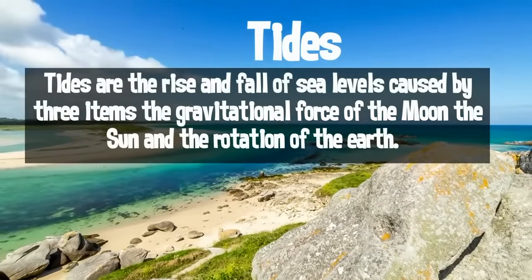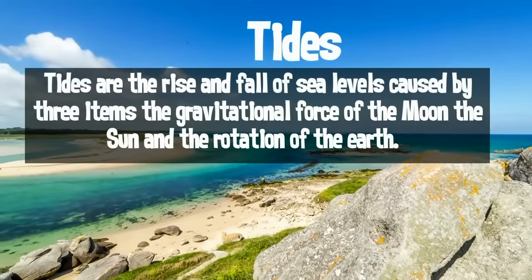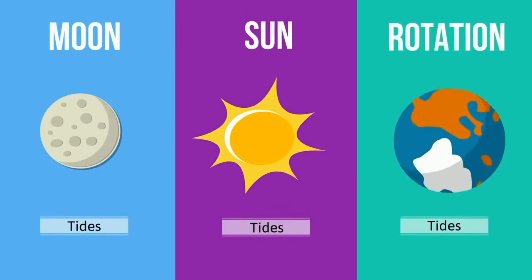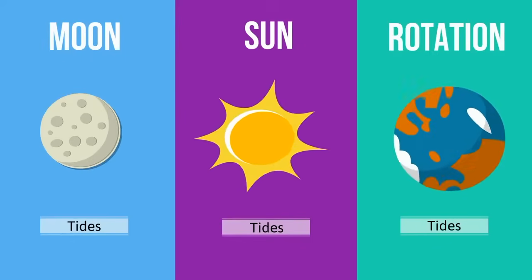Tides are the rise and fall of sea levels caused by three items: the gravitational force of the moon, the gravitational force of the sun, and the rotation of the earth. So let's take a look and see how these three items cause tides.